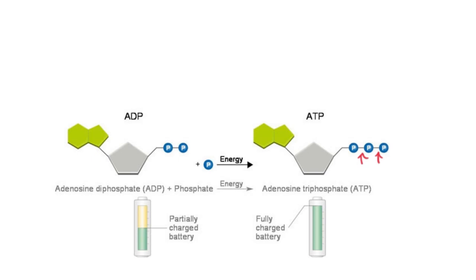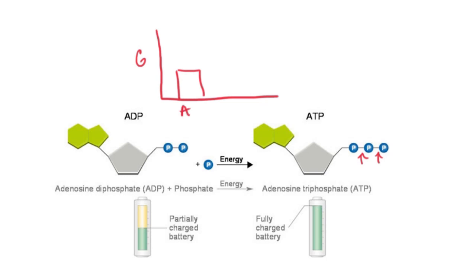ADP is a similar molecule, and really the only difference is that it happens to be missing one of the phosphates. So we think of ADP as a partially charged battery. If we just look at this in an energy diagram, ADP has a certain amount of potential energy, but ATP has even more.